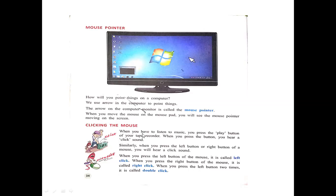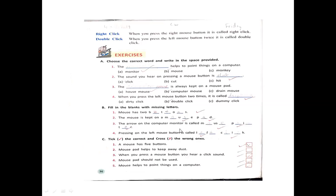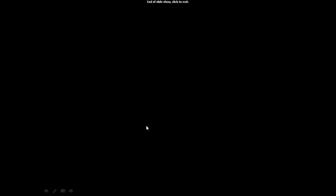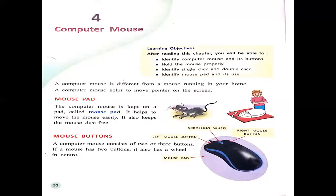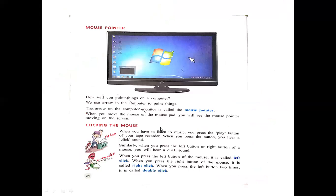Next we have how to click the mouse. When you press the mouse button, you will hear a click sound. It is similar to when you press the play button of your tape recorder — you will hear a click sound. When you press the left button of the mouse, it is called a left click.